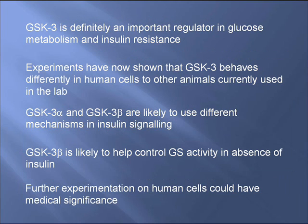It can be seen that GSK3 is definitely an important regulator in glucose metabolism and insulin resistance. Differences between results in human skeletal muscle cells in culture and those in vivo in lab animals such as mice, coupled with knowledge of different concentrations of GSK3 isoforms in humans and animals, suggests that more research should be conducted on human cells. GSK3 alpha and GSK3 beta seem to perform their roles in different ways; their difference in structure allows GSK3 alpha to phosphorylate IRS-1, whereas GSK3 beta doesn't. The location of GSK3 beta in the mitochondria and nucleus may also function differently to GSK3 in the cytosol.